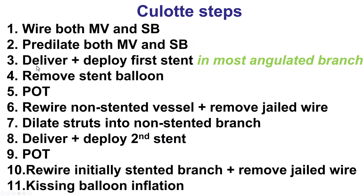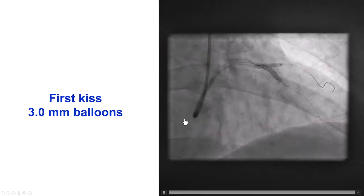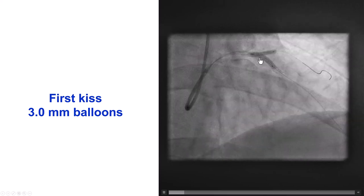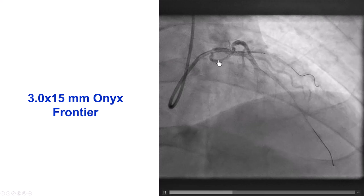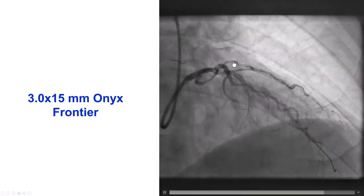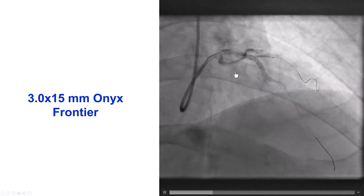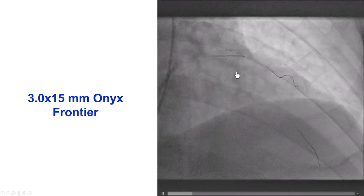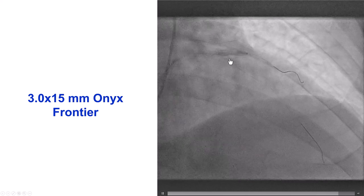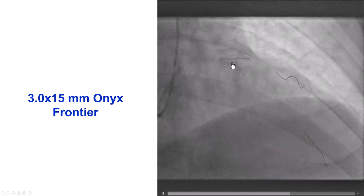The steps of the culotte technique are described separately in a different video. Essentially, both branches are wired. In our case, we have already delivered the first stent — not in the most angulated branch, as this is a bailout from provisional — but the first stent is in. Then we did POT, rewired the vessel, dilated the struts, deployed the second stent, performed proximal optimization, and rewired the initial stented branch. We rewired and did the first kissing balloon inflation with two 3.0 mm balloons in the diagonal and the LAD. We then placed a 3.0 by 15 mm Onyx Frontier from the diagonal going back into the LAD, creating a double-barrel or culotte segment in the proximal LAD. We tried to optimize the overlap to avoid excessive stent length proximally in the double-barrel area.